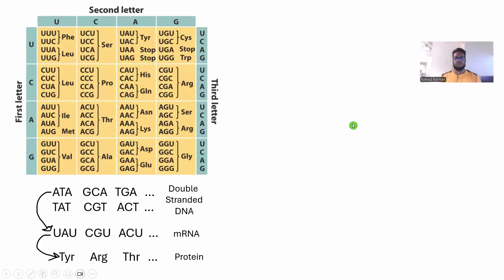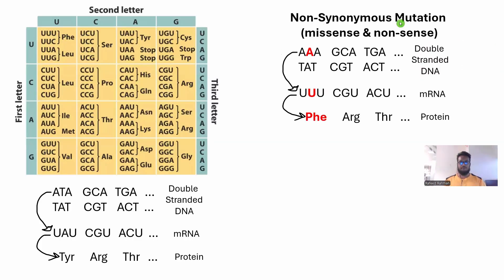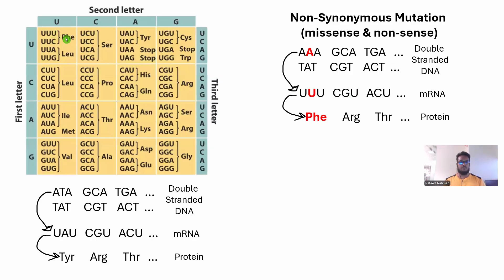Now what happens when mutation happens? Let's talk about non-synonymous mutation. When the synthesized amino acid changes because of some change in the DNA, it is called a non-synonymous mutation. For example, you have ATA here. Suppose T mutated into A — then in the mRNA the complementary base will be U, and triple U is actually PHE. So this will be PHE, which is different from TYR. This is a non-synonymous mutation, also called a missense mutation because it is changing the amino acid.